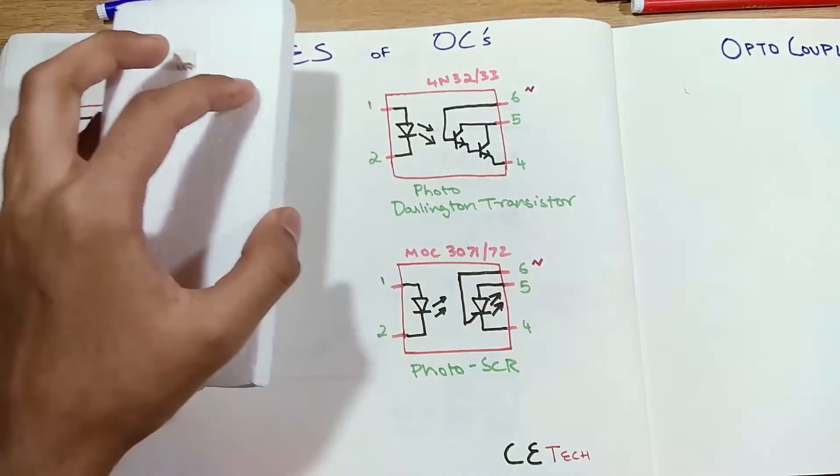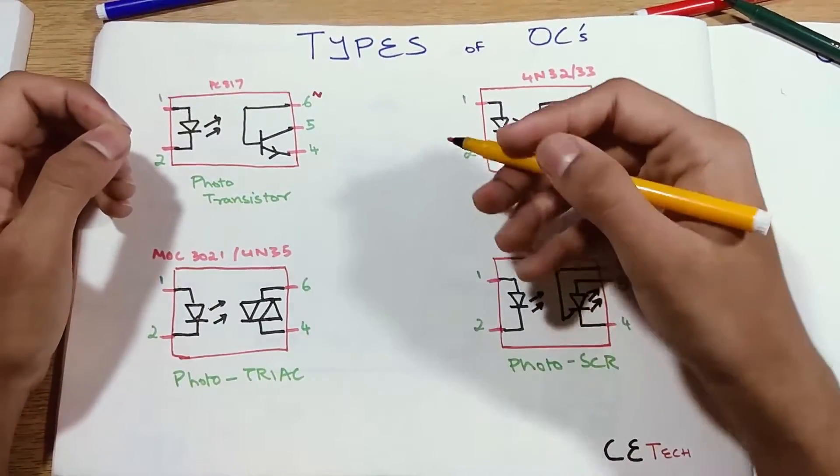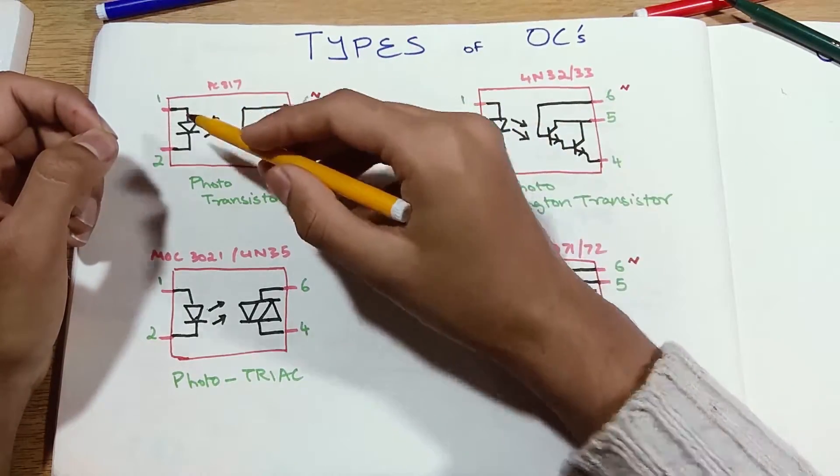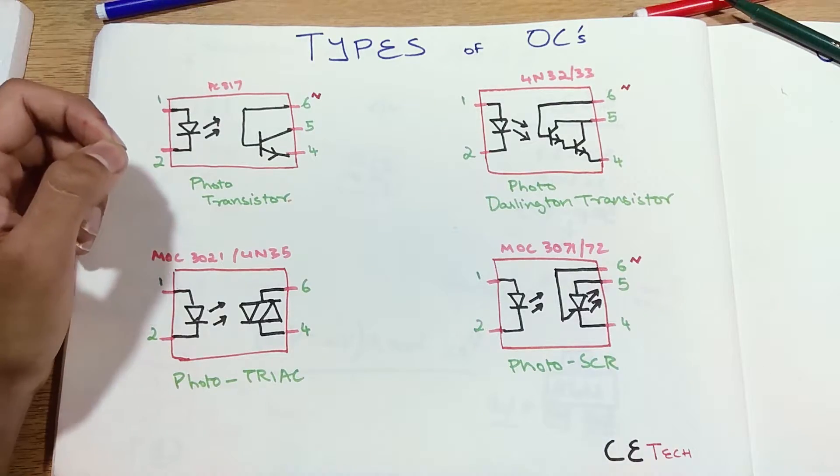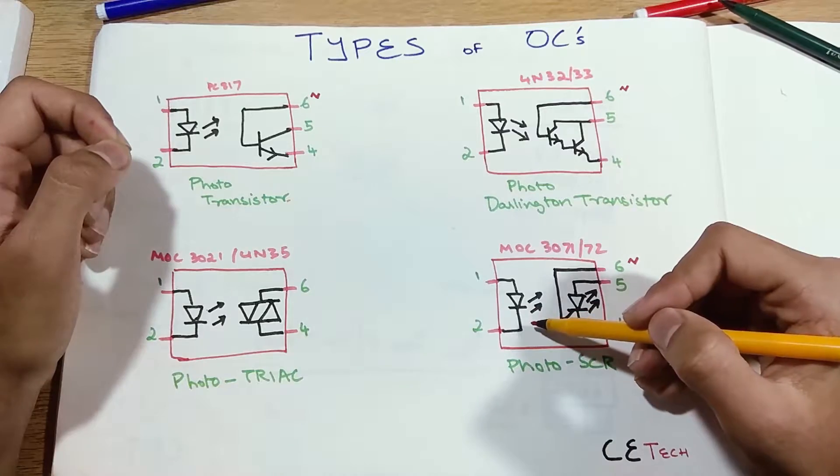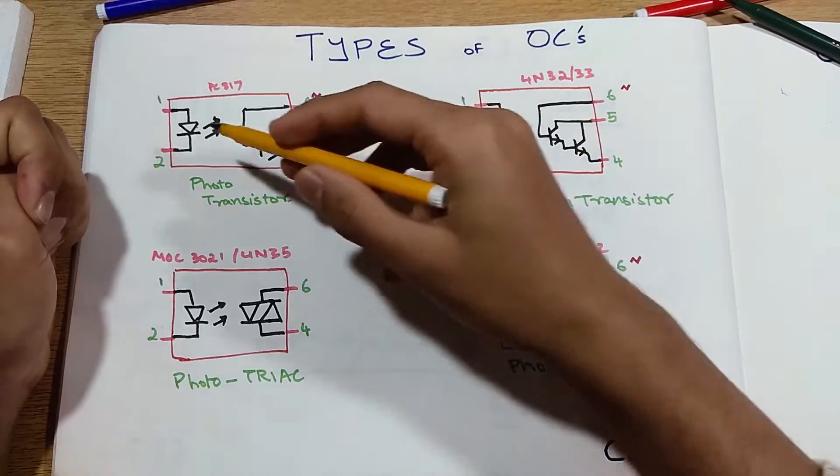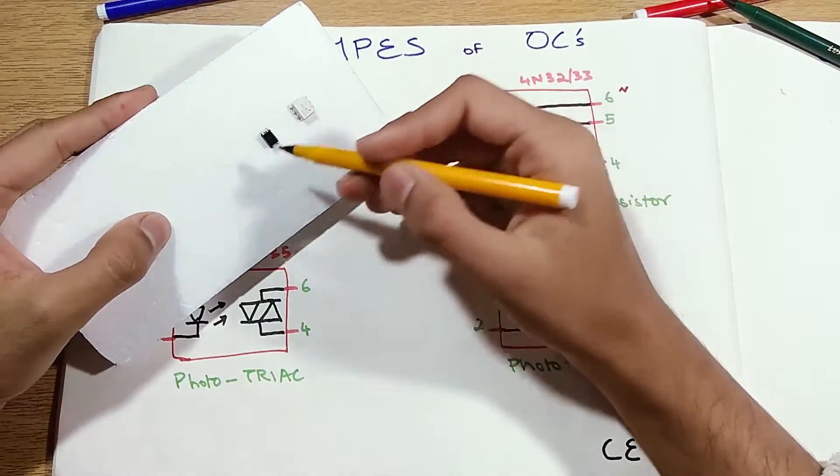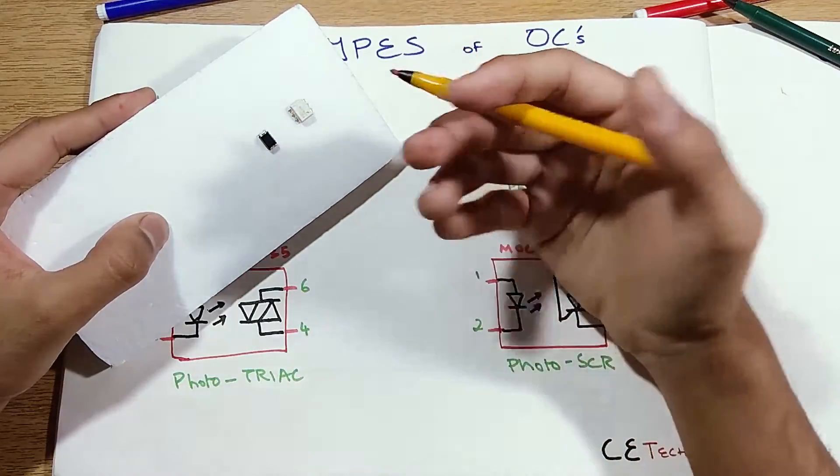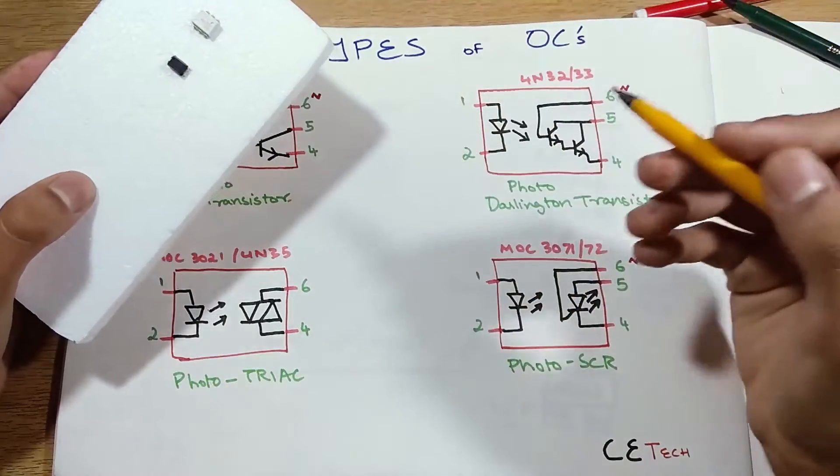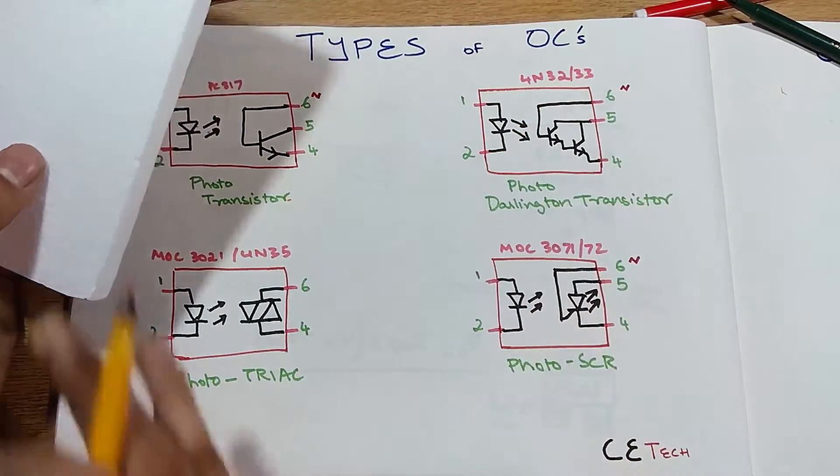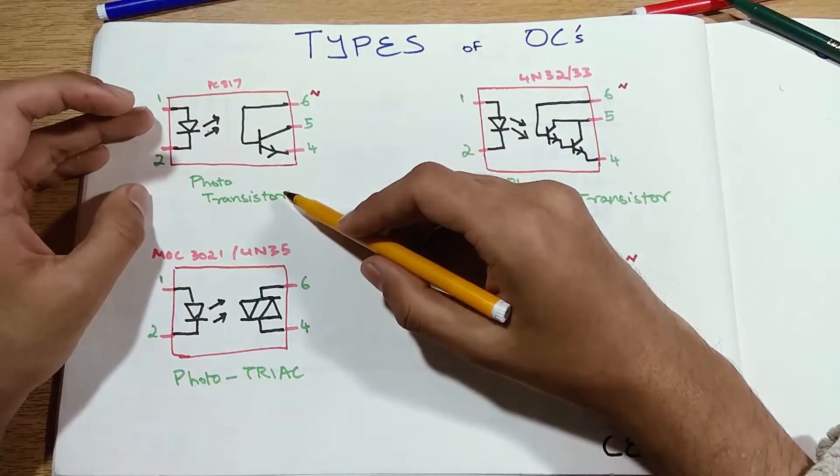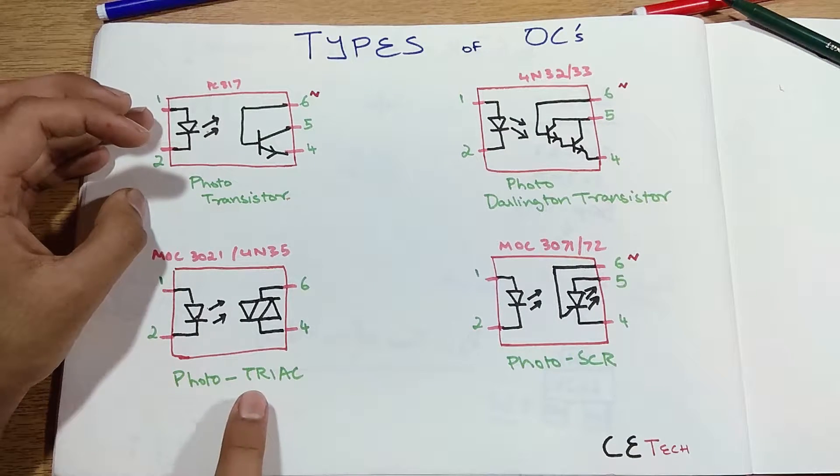So that is what an optocoupler or an optoisolator basically is. There are different types of optocouplers or optoisolators currently present depending on their internal structure. So we see the types of optocouplers. First one is the photo transistor based optocoupler. In all of the four types of optocouplers you will see that the LED, the IRED or the LED is common. So in pins 1 and 2, there is a light emitting diode which emits light inside the package itself. Because it's an infrared LED and the package is sealed, you cannot see the light when you connect these to the circuit, but there is light, trust me on that.